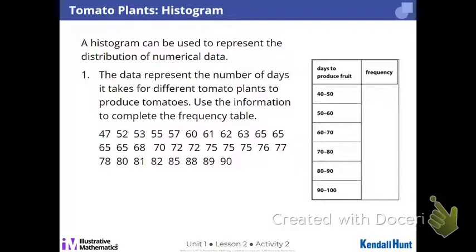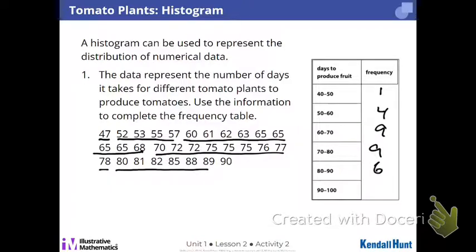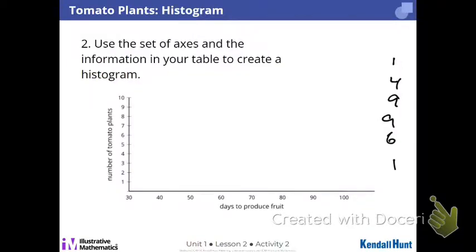If I'm looking at the interval 40 to 50, I got 1, just 47. 50 to 60, I got 4 of those. 60 to 70, 9. 70 to 80, 9. 80 to 90, 6. And one last one at 90. We good there? So we're going to put this on a histogram.